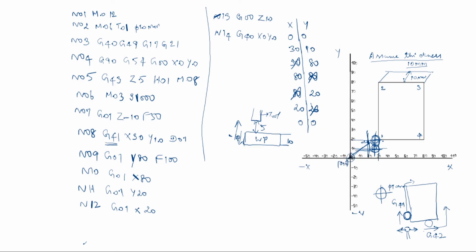N15: M05 — spindle off. N16: M09 — coolant off. N17: G28, X0, Y0, Z28 — return to reference point; the machine comes back to the reference point. N18: M30 — end of program and rewind.